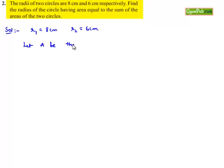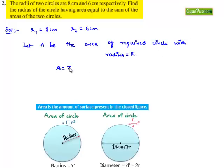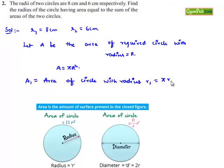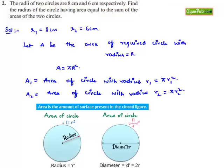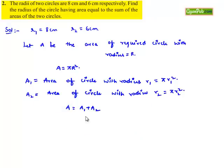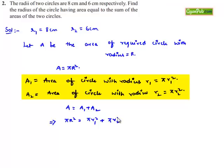Let A be the area of the required circle with radius r, then A = πr². Let A1 be the area of the circle with radius r1, that is A1 = πr1², and A2 be the area of the circle with radius r2, that is A2 = πr2². According to the problem, area of the required circle equals the sum of the areas, so A = A1 + A2, which implies πr² = πr1² + πr2².